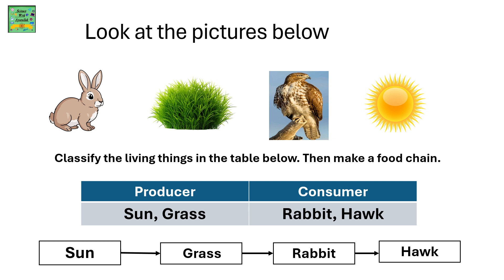The order of the food chain would be: sun, grass, rabbit, and hawk. Grass needs sun to grow, a rabbit needs grass to survive, and a hawk needs a rabbit to survive.